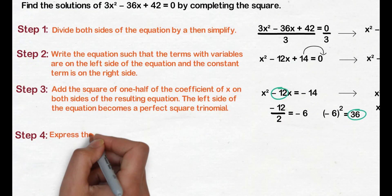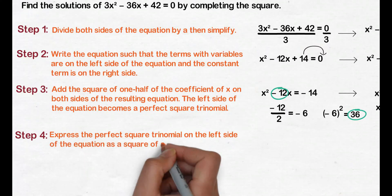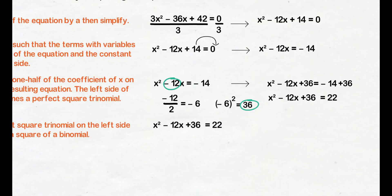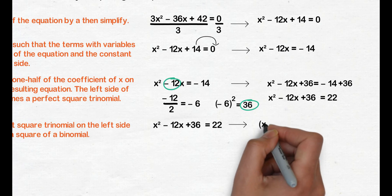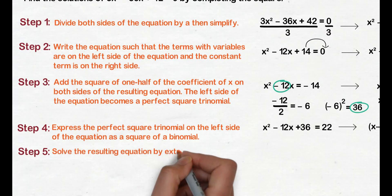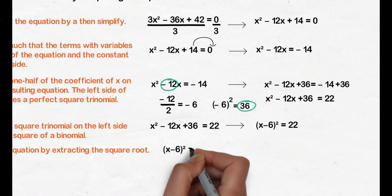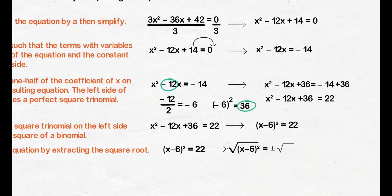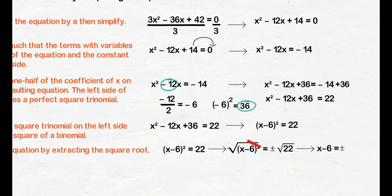Step 4: express the perfect square trinomial on the left side as a square of a binomial. Square root the quadratic and the constant term, and follow the sign of the coefficient of the linear term. We get quantity x minus 6 raised to 2 equals 22. Step 5: solve the resulting equation by extracting the square root. Square root natin both sides at maglagay ng plus at minus sign sa right side. Makakancel ang square sa left side at mananatili naman sa radical ang 22 dahil hindi ito perfect square at wala itong factors na magbibigay ng perfect square. So we have x minus 6 equals positive negative square root of 22.